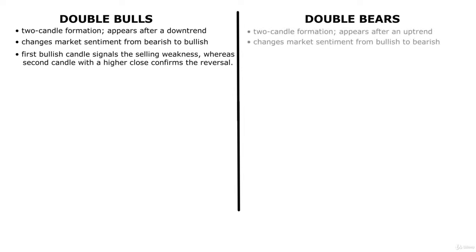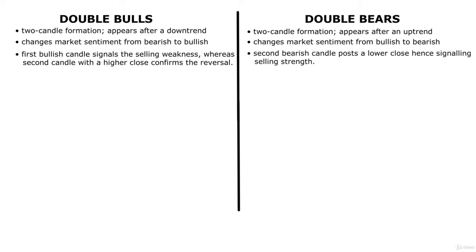On the other hand, a double bear pattern terminates an uptrend as sellers enter in large numbers. The second candle in a double bear pattern must have a lower low for closing price when compared to the first candle's closing price. Both of these candles must be of the bearish color, hence confirming the selling pressure in the market.